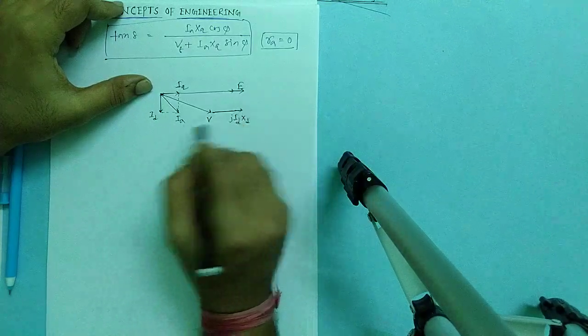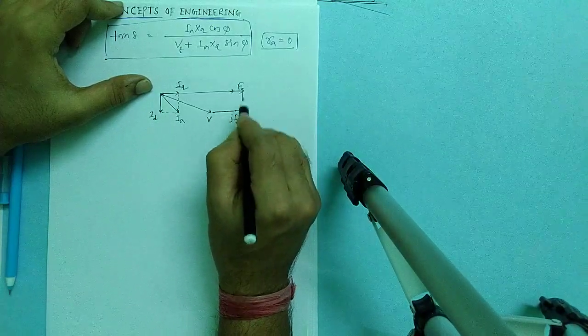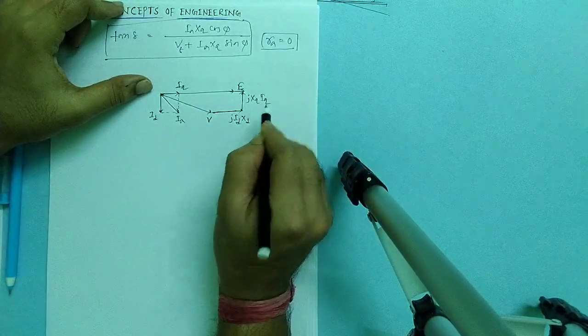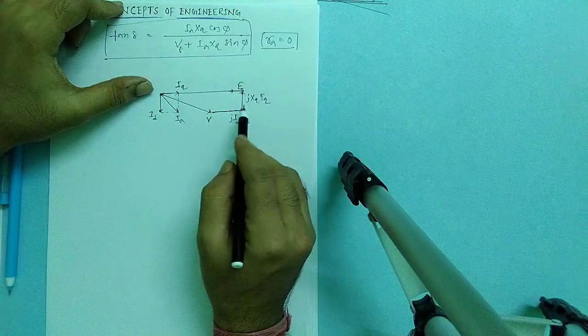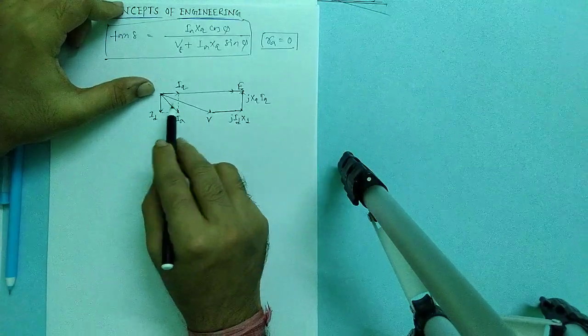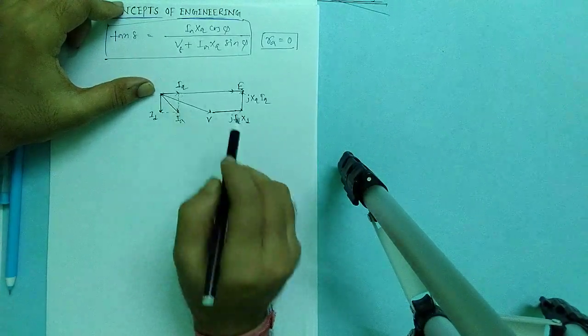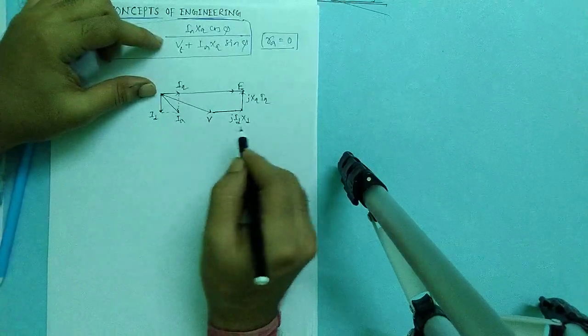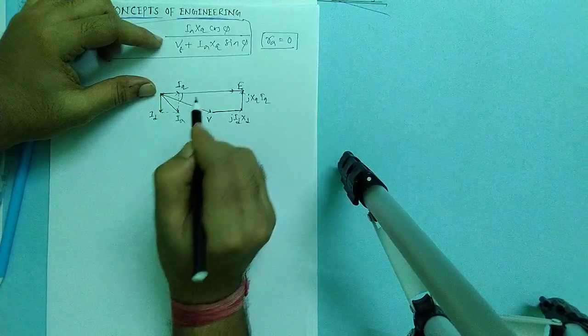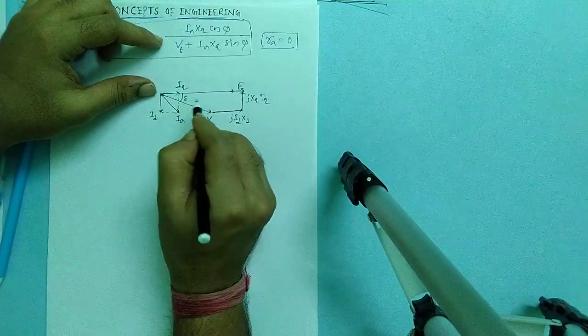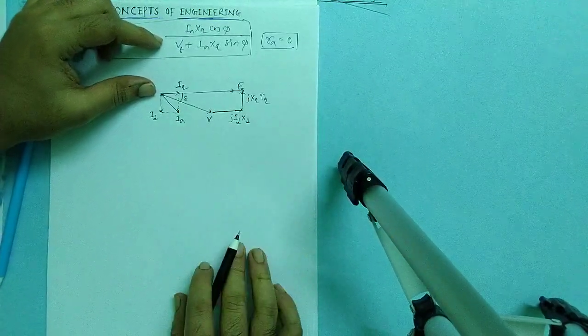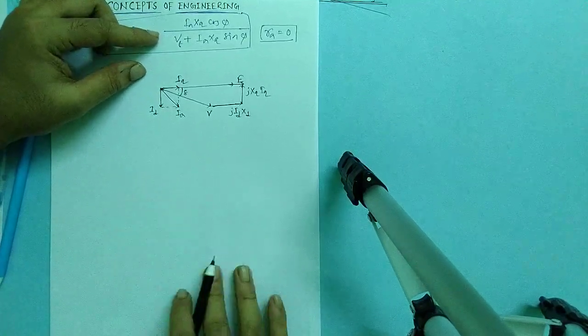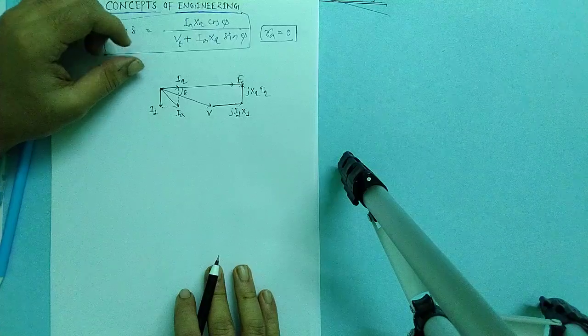Voltage will be like that, so this is my V, and my i_d X_d will be like that. So this is my V_t, and J i_d X_d because i_d is here and J of i_d X_d leads the i_d by 90 degree. Similarly, J of i_q X_q leads the current i_q. So this is my delta, the angle between E and V. I have already explained it.